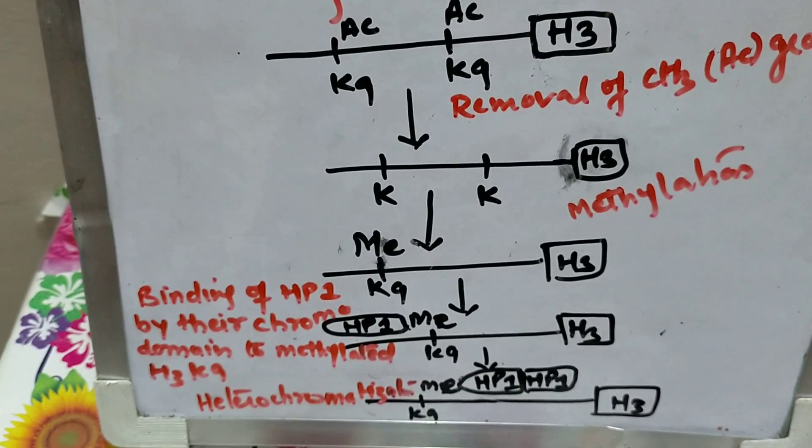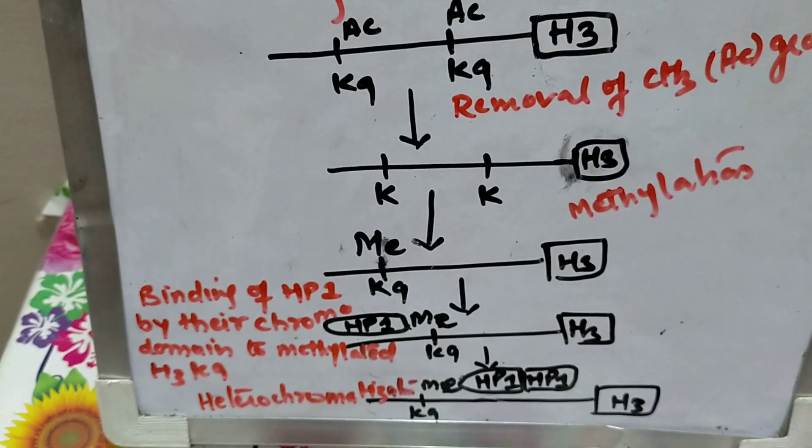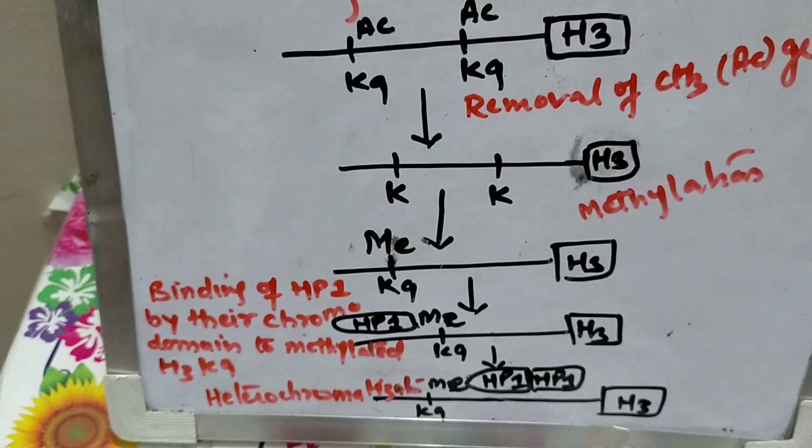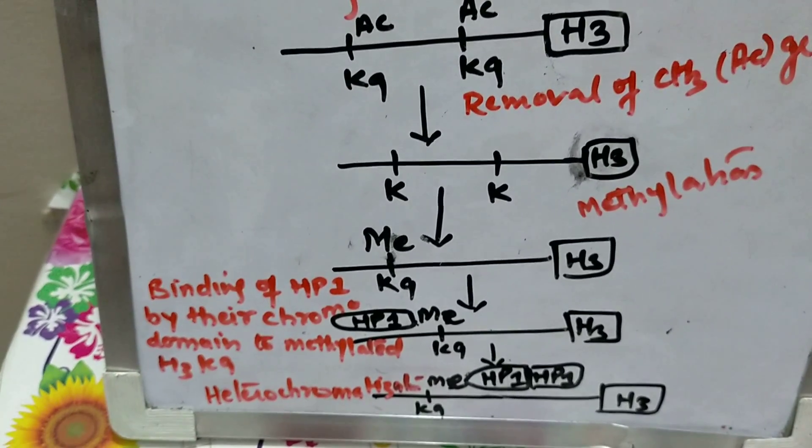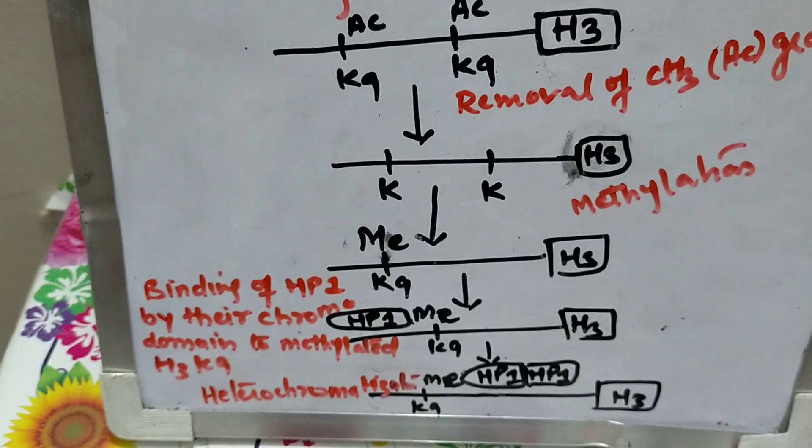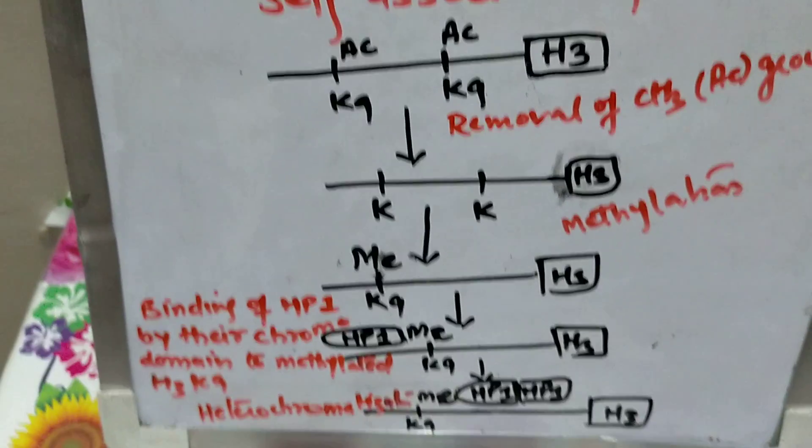Now HP1 has a cooperative activity. What is cooperativity here? If one molecule comes, then the other will follow. So in this way, many HP1 will come, assemble here, and heterochromatin formation will occur and the gene will be repressed.